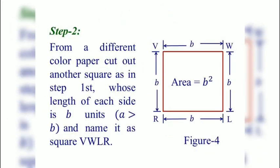Next step: From a different colored paper, cut out another square whose length of each side is B units, where A is greater than B, and name it square VWLR. Here in figure 4, VWLR is a square having side B units and its area is B square square units.